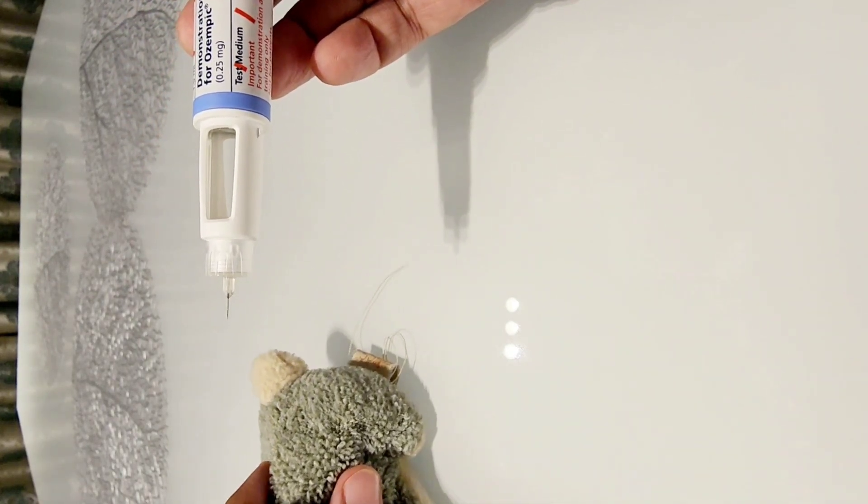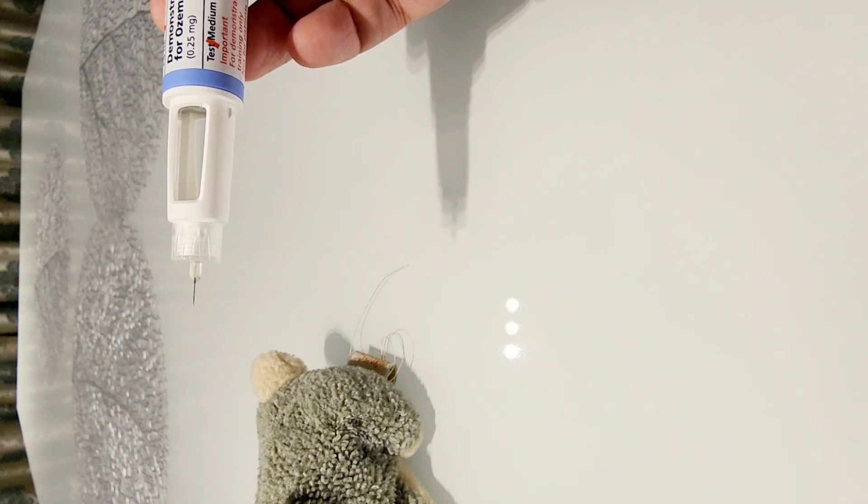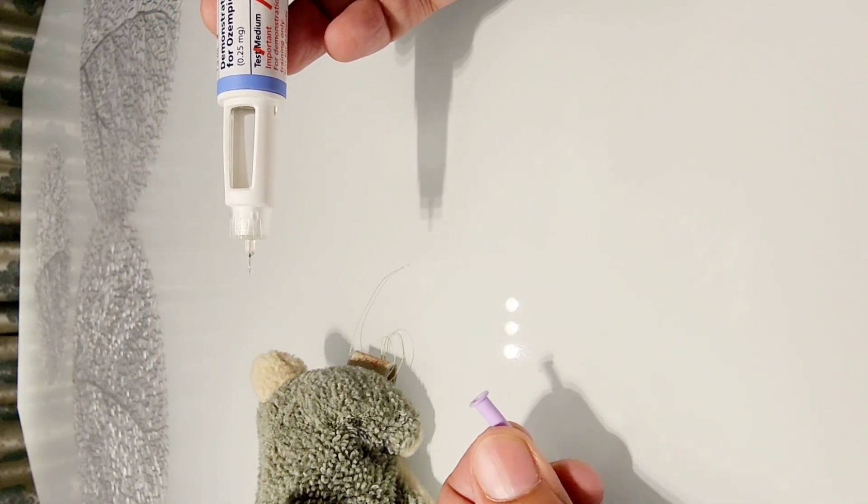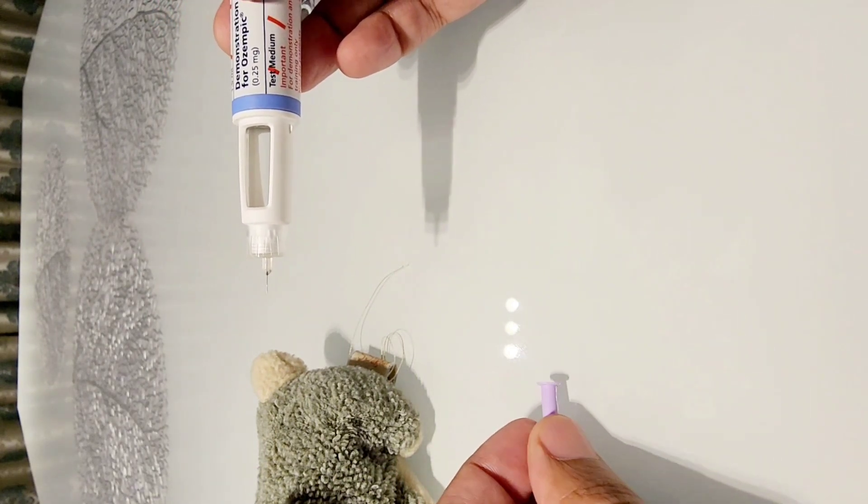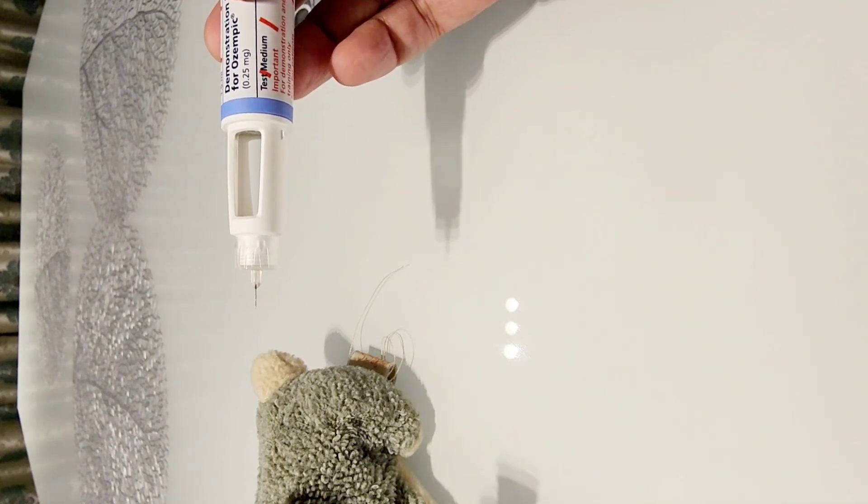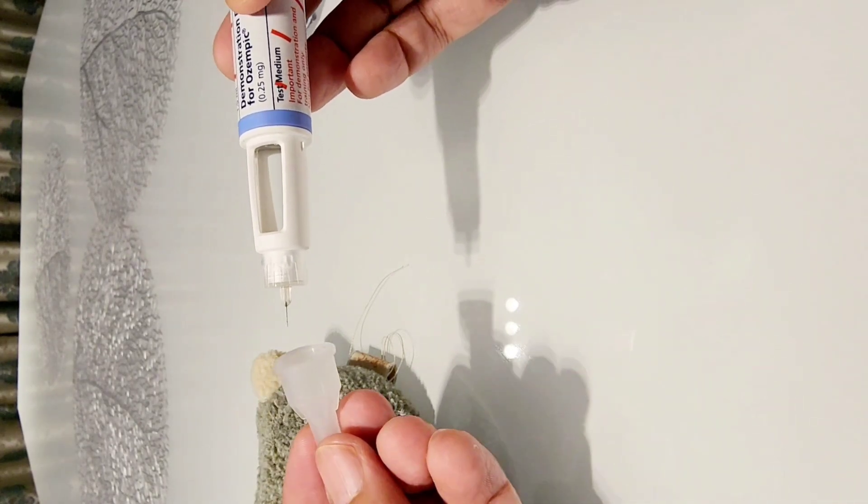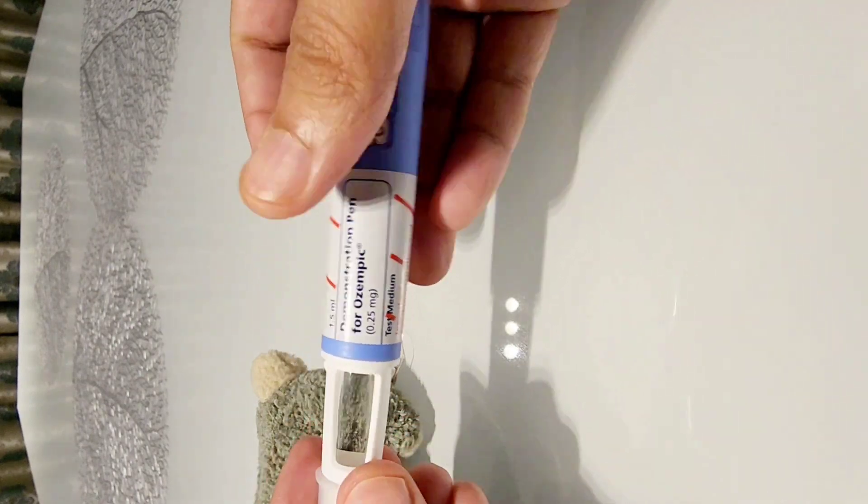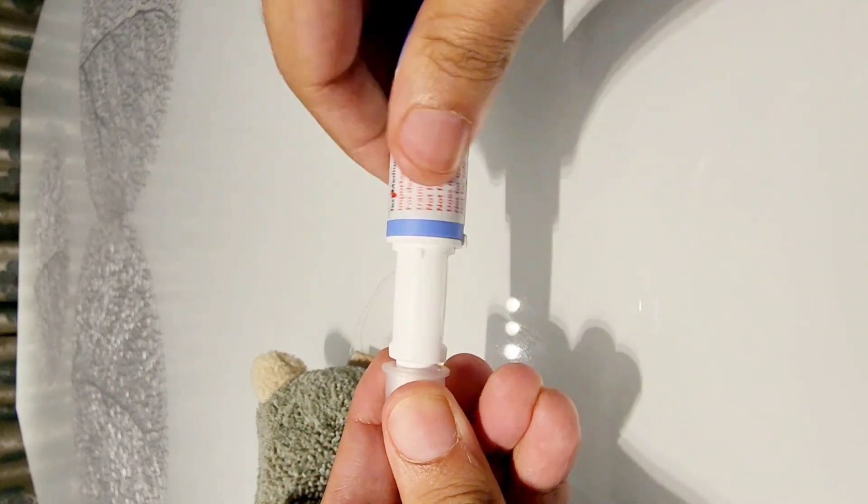And you can just remove the needle. Every time there should be a new needle, do not put this small protective sheet back on because it is a hazard for pricking yourself. Just use this bigger cap to remove the needle and throw it away.